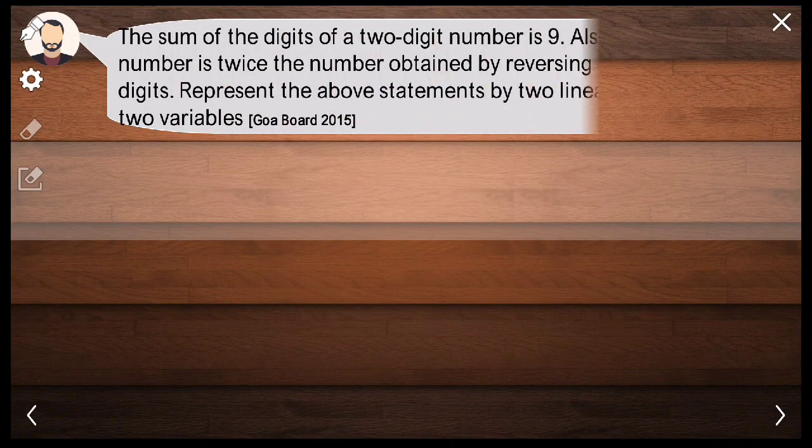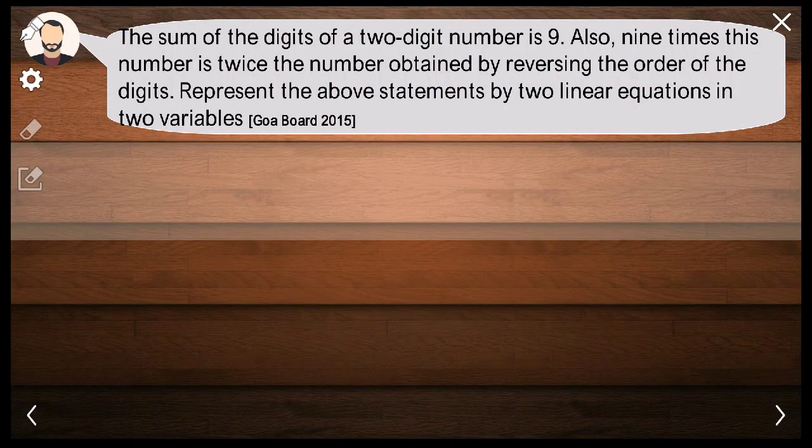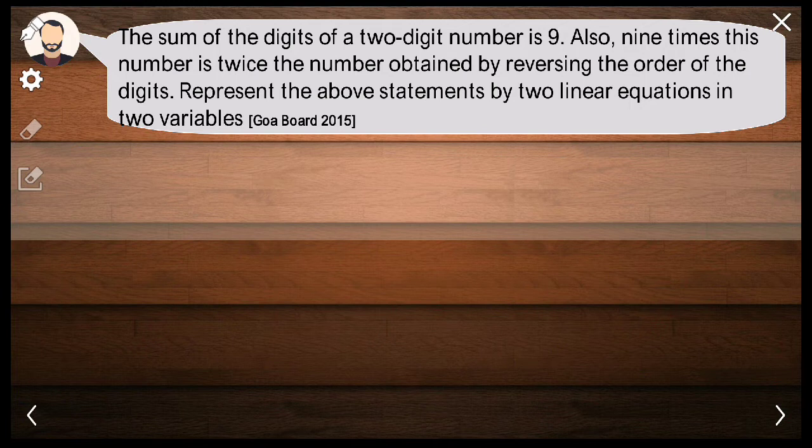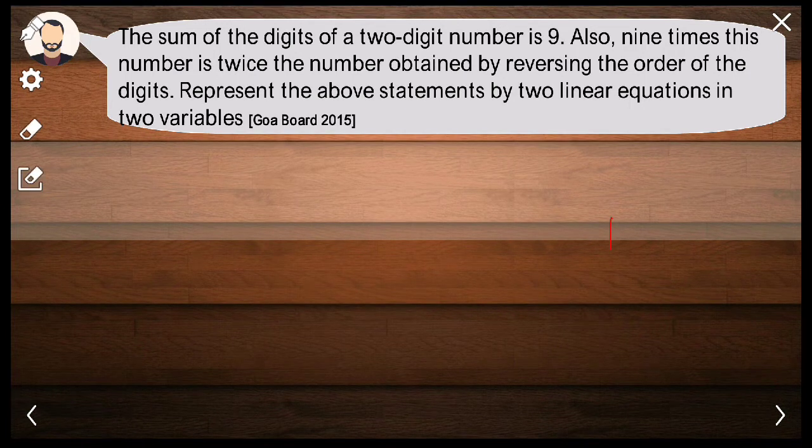Knowing the purpose of studying word problems, I think we should start solving a few. The sum of the digits of a two-digit number is nine. Also, nine times this number is twice the number obtained by reversing the order of the digits. Represent the above statements by two linear equations in two variables.